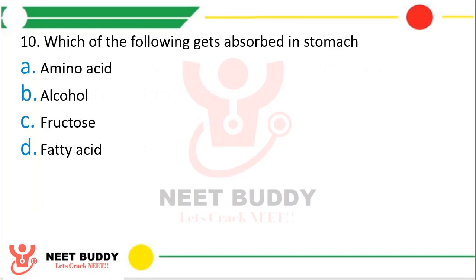Question 10. Which of the following gets absorbed in stomach? Option a. Amino acid, option b. Alcohol, option c. Fructose, or option d. Fatty acid. The correct answer is option b, alcohol gets absorbed in stomach.